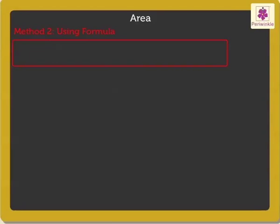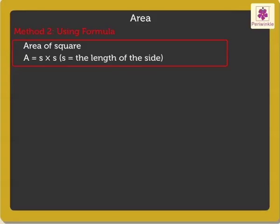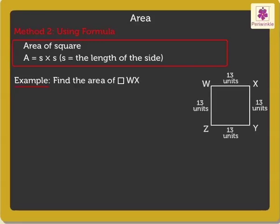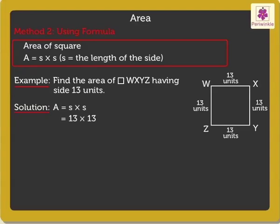The formula to find the area of a square is different. It is A = S × S, where S is the length of the side of the square. Let's find the area of the square WXYZ having side thirteen units. Area equals side into side — we get the answer as one hundred sixty-nine square units.